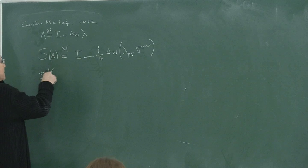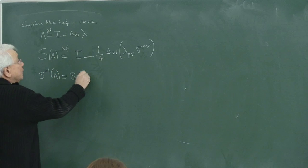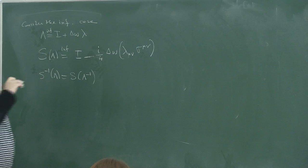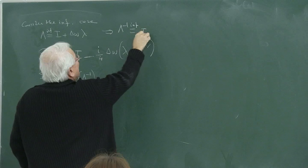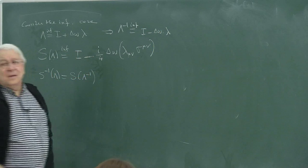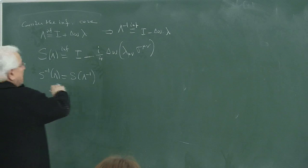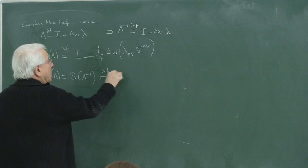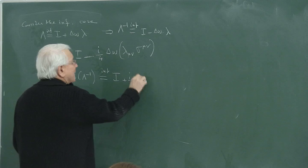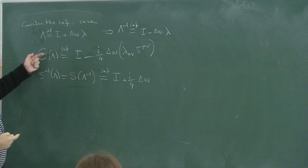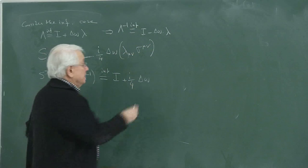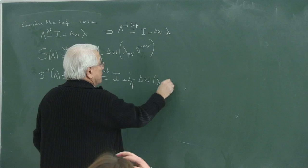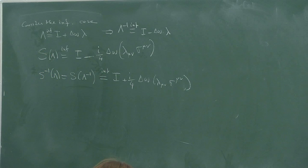What is S-inverse of lambda? It is S of lambda-inverse. I have to remember: the infinitesimal form of lambda-inverse is I minus lambda. Therefore, S-inverse will have the form: identity plus i over 4 delta-omega sigma — because when you go from lambda to lambda-inverse, you just replace lambda with minus lambda.